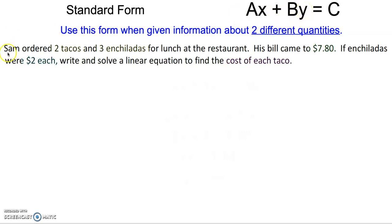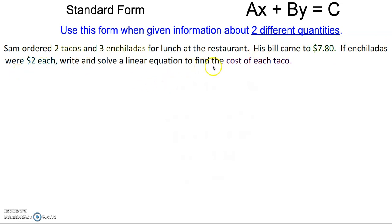So looking here in the problem: Sam ordered two tacos and three enchiladas for lunch at the restaurant. His bill came to $7.80. If enchiladas cost $2 each, write and solve a linear equation to find the cost of the taco.